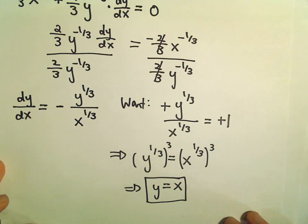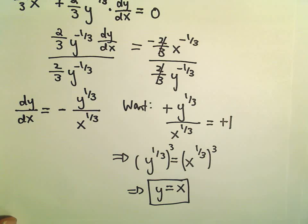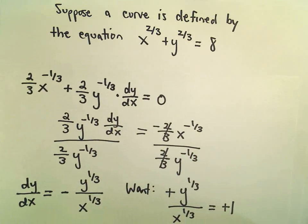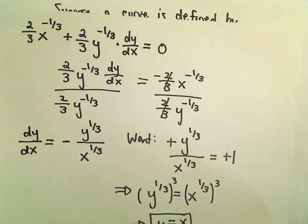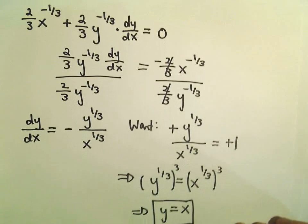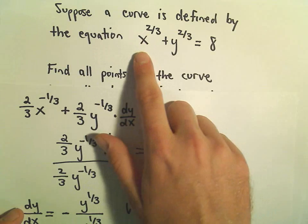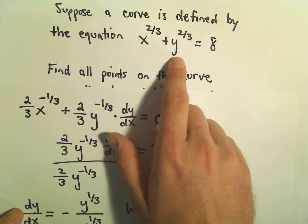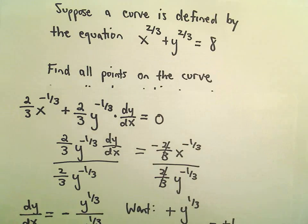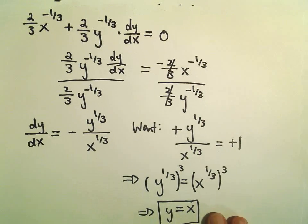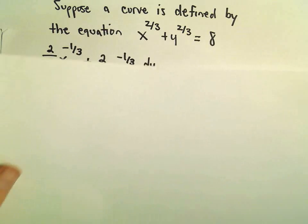We can't just pick any two equal values, because they also have to be sitting on this curve. So we can think of this as a system of equations: we have the equation that y has to equal x, and we have the equation x to the two-thirds plus y to the two-thirds equals eight.